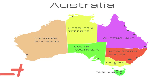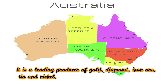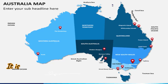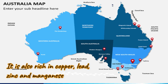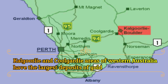Now let us know about the distribution of minerals in Australia. Australia is the largest producer of bauxite in the world. It is also a leading producer of gold, diamond, iron ore, tin, and nickel. Apart from these, it has rich deposits of copper, lead, zinc, and manganese. The Kalgoorlie and Coolgardie areas of Western Australia have the largest deposits of gold.